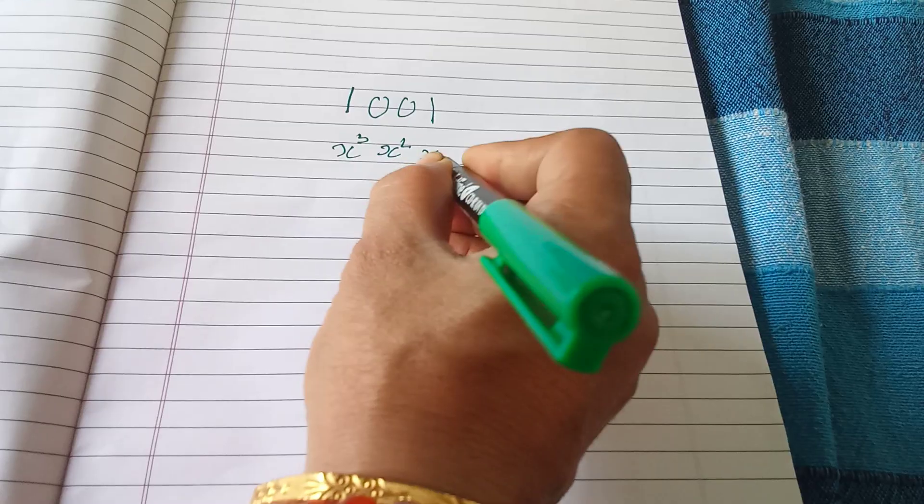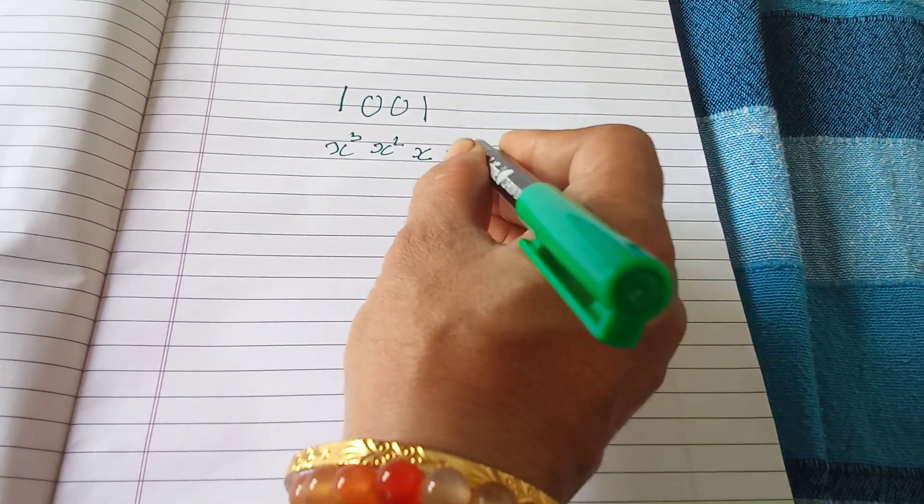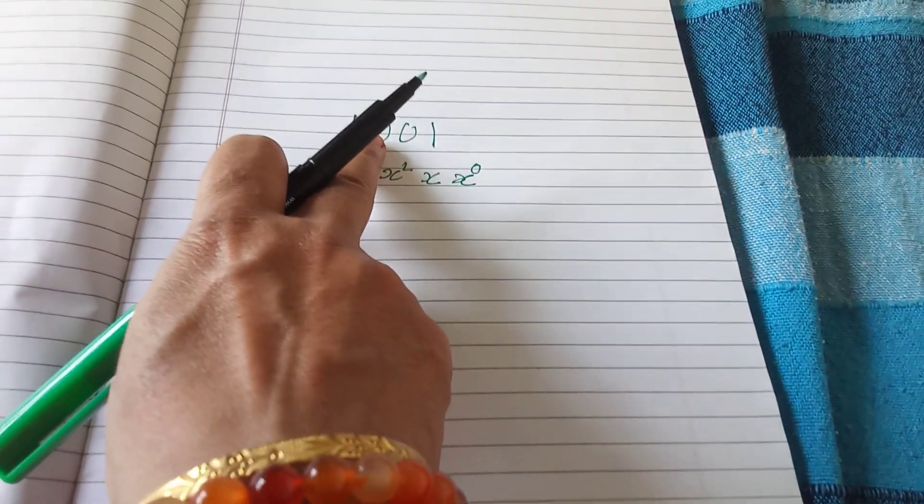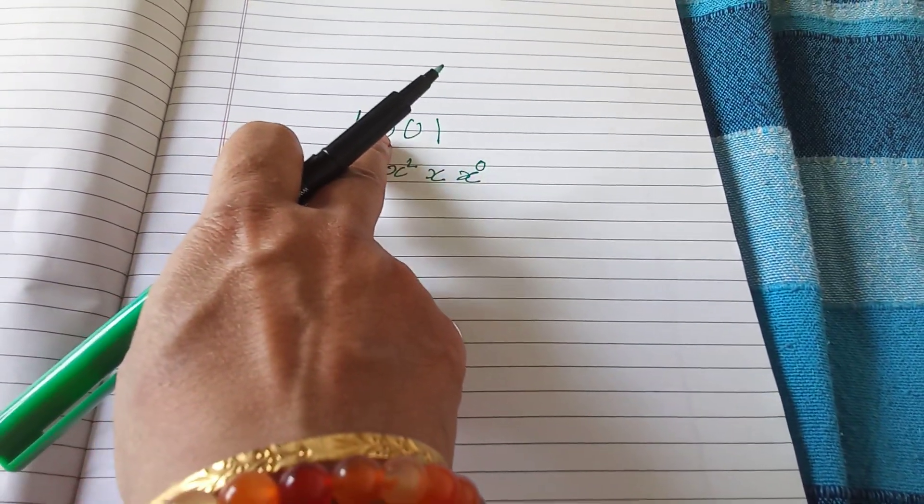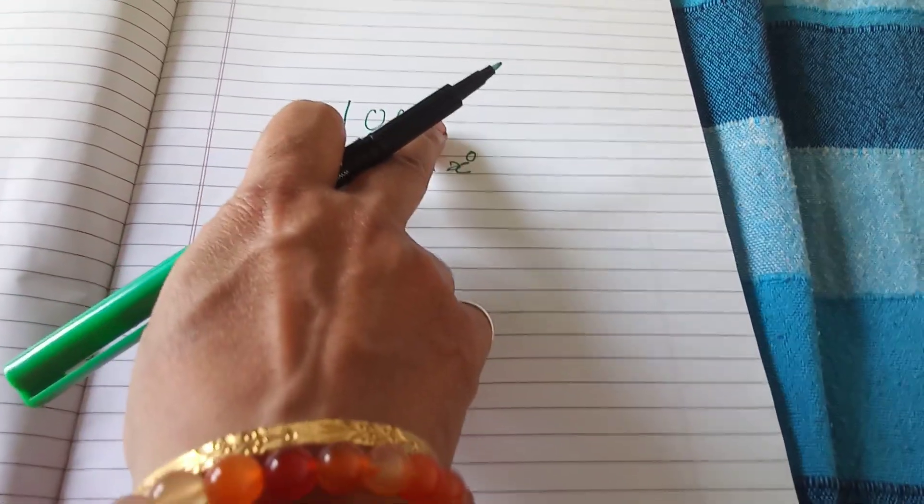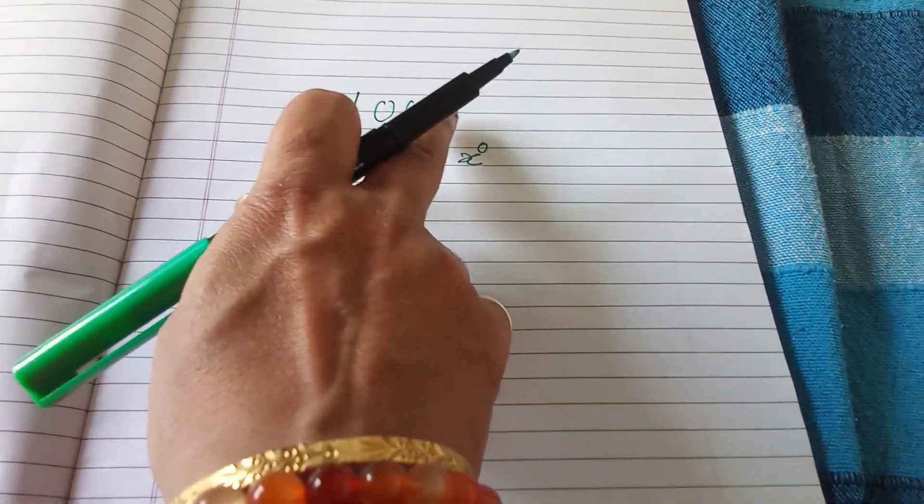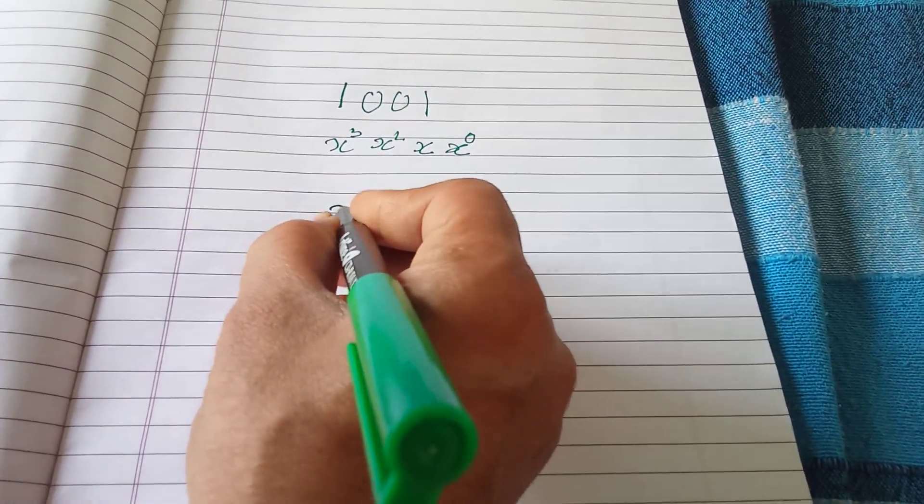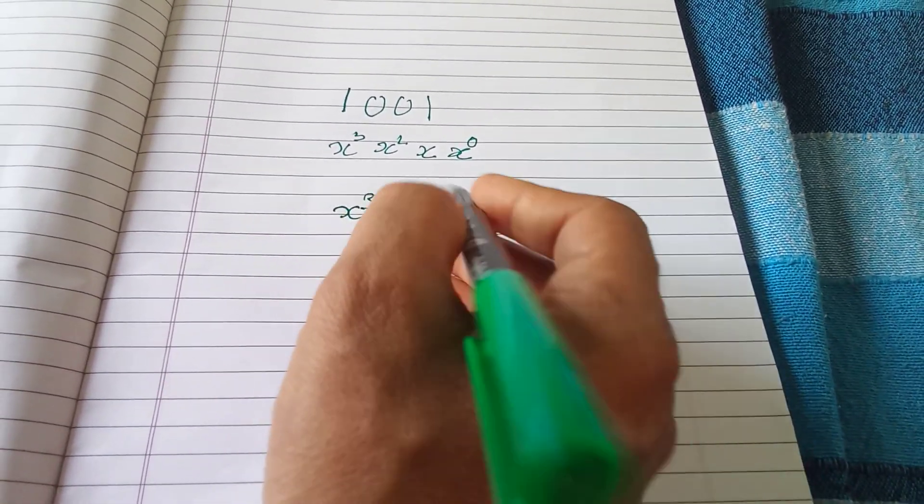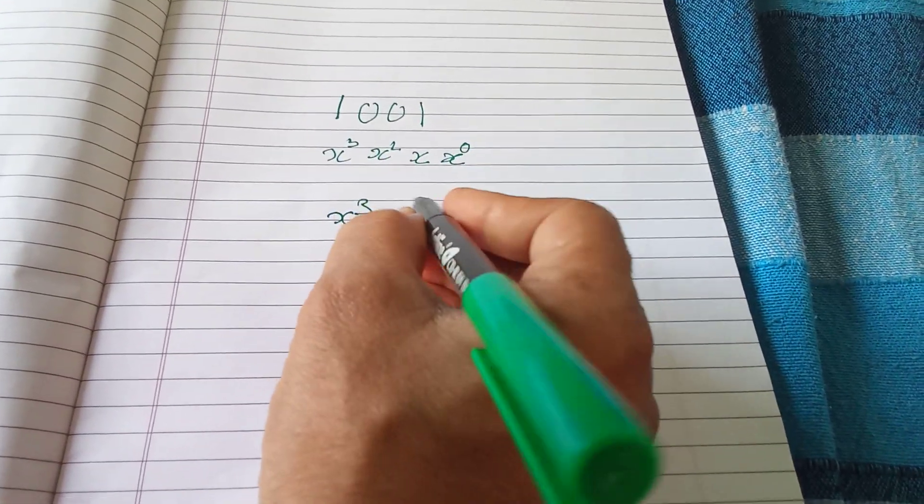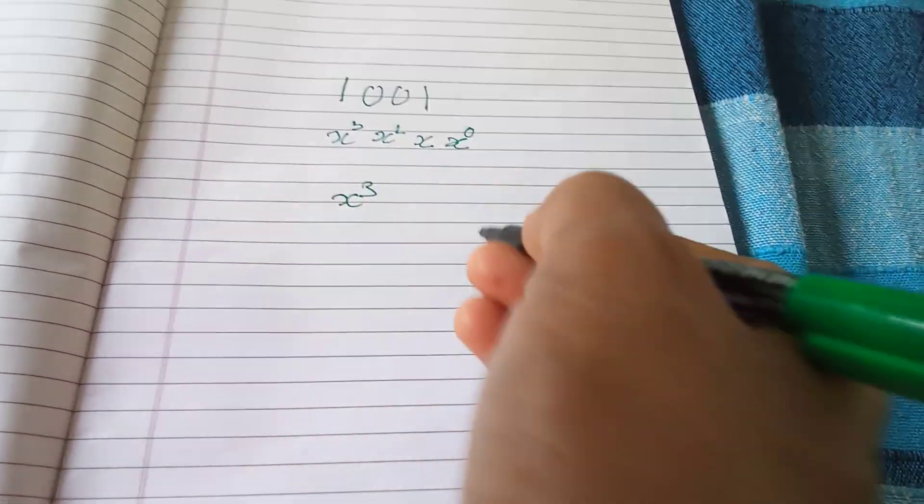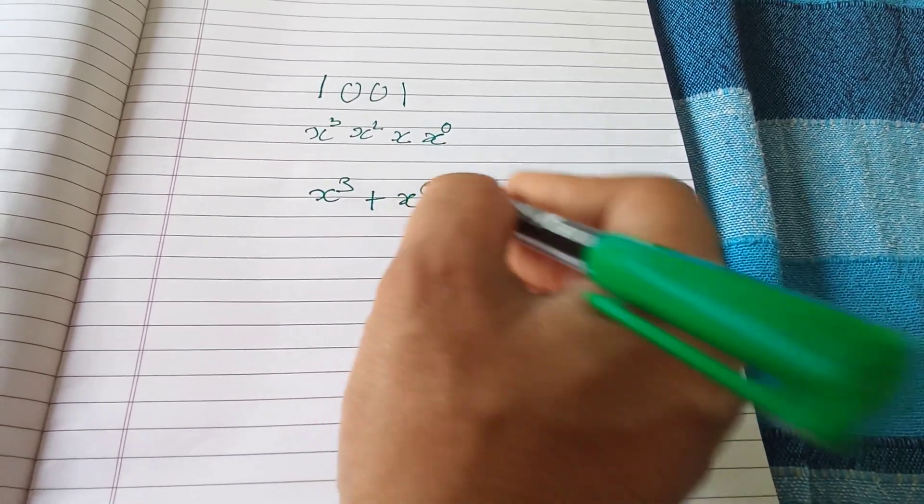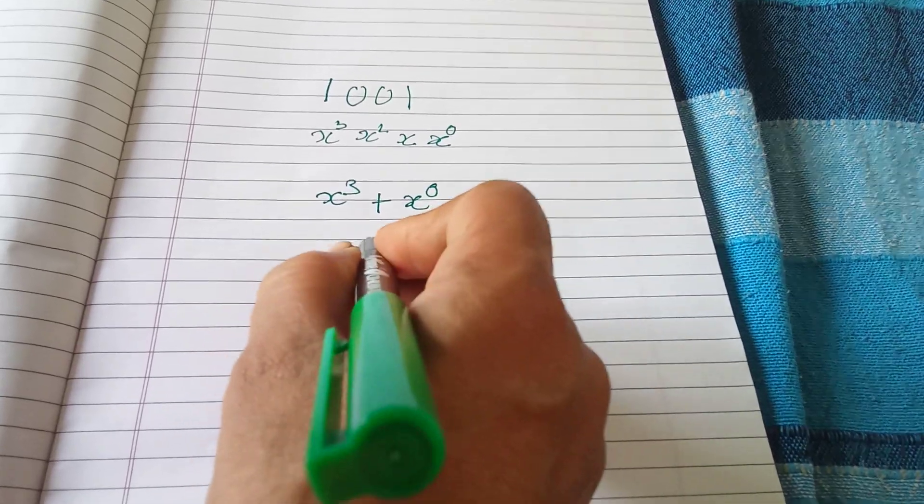So x³ corresponds to this bit, x² for this bit, x for this bit, and x⁰ for this bit. Then wherever one is there, you have to write those powers. So x³, zero you don't consider, then plus x⁰, that is x³ plus 1, because anything raised to 0 is 1.